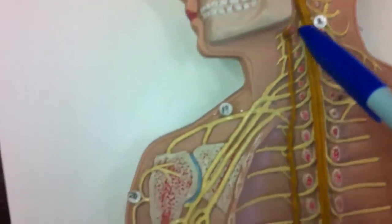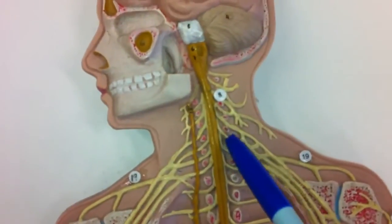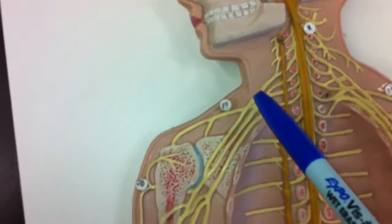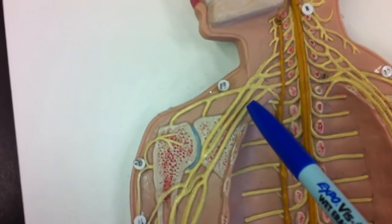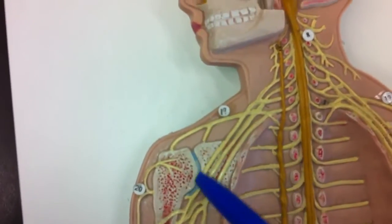We have the cervical plexus, which is up here, and then we have the brachial plexus, which is this grouping right here.